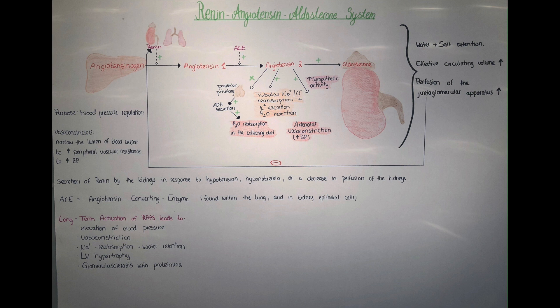In the next step, the ACE enzyme comes into play. ACE stands for angiotensin-converting enzyme, and it converts angiotensin-1 into the final powerful vasoconstrictor, angiotensin-2, by removing two C-terminal residues from angiotensin-1. The ACE enzyme is found within the lungs and within the kidney's epithelial cells.